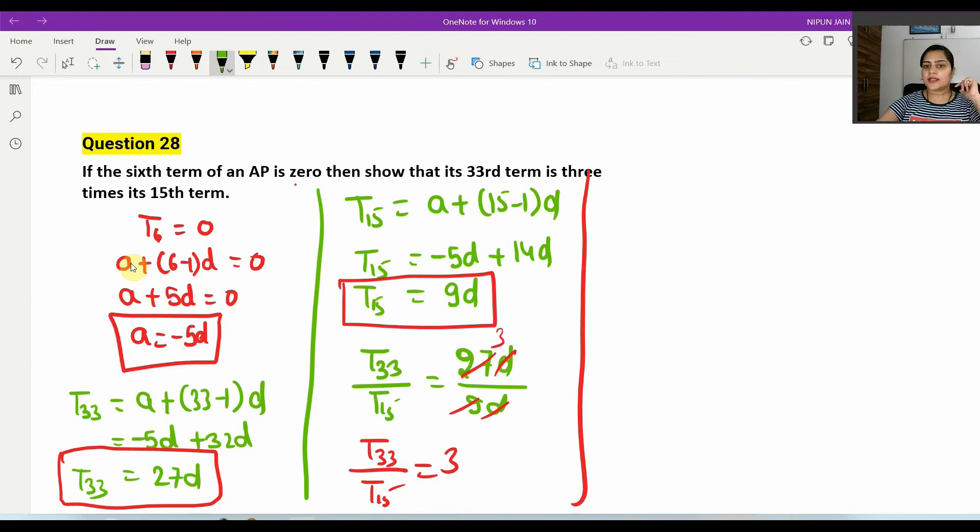Now friends, T33 is equal to 3 into T15. So you have to show that your 33rd term is 3 times the 15th term, right?